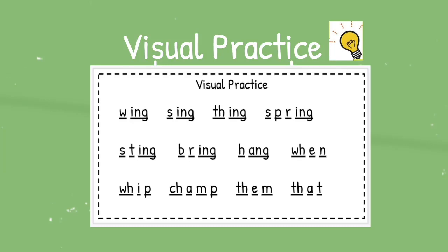Now, let's go through and read these words just as we see them and try to pick up the pace as we read them. Wing, sing, thing, spring. Let's read every other word in that first row. Wing, thing. Let's look at the second row of words. Sting, bring, hang, when. Let's read them backwards. When, hang, bring, sting. And the last row of words. Whip, champ, them, that. There's lots of different ways that you can practice reading these words. Instead of going through the rows, you can go down the columns. You can read every other word. You can read them backwards. Just have some fun with it and practice. Because remember, practice makes progress.